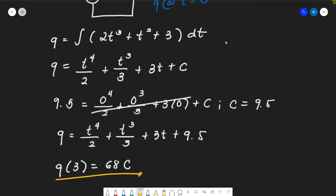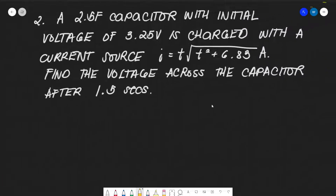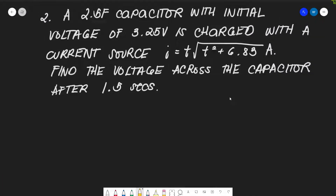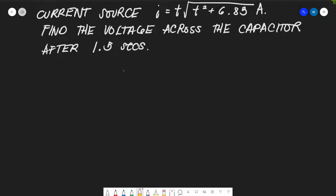That's how you solve electric circuits in integral calculus. Let's proceed with example number 2. A 2.5 farad capacitor with an initial voltage of 3.25 volts is charged with a current source i = t√(t² + 6.83) amperes. Find the voltage across the capacitor after 1.5 seconds. Since we are looking for voltage, we have another formula: V = (1/C)∫i dt.